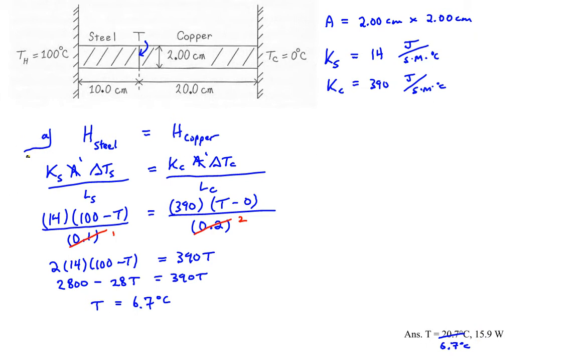Part B is asking for the total heat flow. To find the total heat flow or rate of heat flow or heat current, we basically take that temperature that we just found and we substitute back into either of the previous equations for steel or for copper. So I'll just do it for steel. So that would be conductivity for steel times the area times the change in temperature for steel divided by the length of the steel. So that would be, for steel, it's 14 joules per second times meter times degrees Celsius. You'll notice I'm putting units. I should have done it over here. But I'm purposely doing units because I want to make sure that I have the right units for my energy flow.